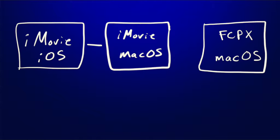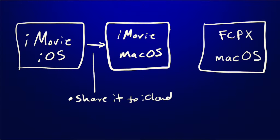First, what you need to do is take your iMovie for iOS project and share it to iCloud. When you share it, choose iMovie project as your selection. This creates a file that can be opened in iMovie for macOS.